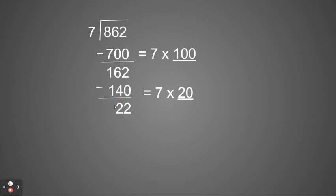So now again, I'm going to look at how many times can 7 go into 22. I know 7 times 3 is 21. So I'm going to do 7 times 3, and that would be 21. So just like I did with my 700 and my 140, now with my 21, I'm going to subtract. When I do so, I have 1 left.